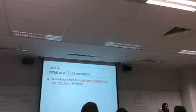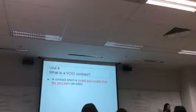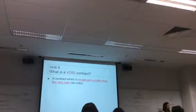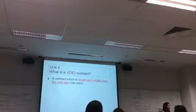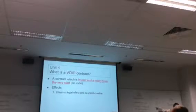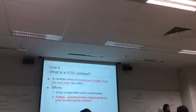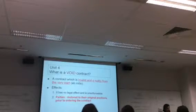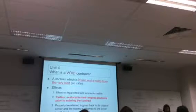What is a void contract? No contract from the very start — we say it is void ab initio, meaning from the start. It was a null and void contract. Example: illegality. The whole contract was illegal, and it seems like no contract because the law does not recognize an illegal contract. That's a void contract — no legal effect, unenforceable. The parties are restored to their original positions prior to entering into the contract. Whatever property is transferred is given back to the original owner; whatever money has been received is returned back.